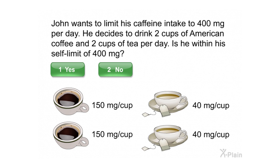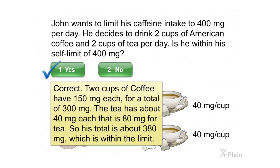Correct! Two cups of coffee have 150 milligrams each, for a total of 300 milligrams. The tea has about 40 milligrams each, that is 80 milligrams for tea. So his total is about 380 milligrams, which is within the limit.